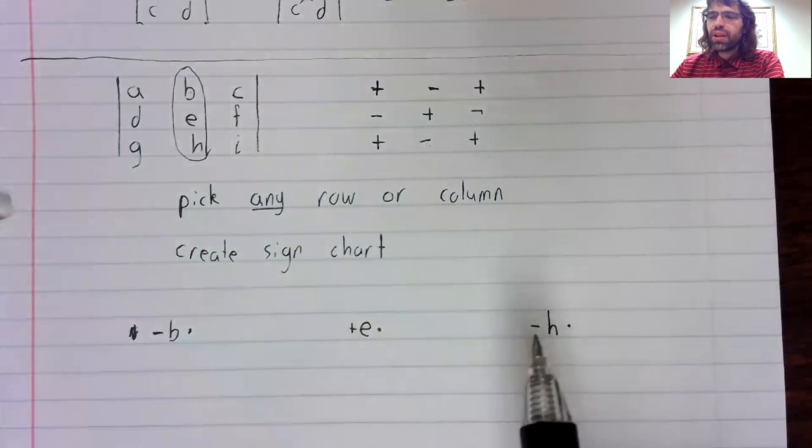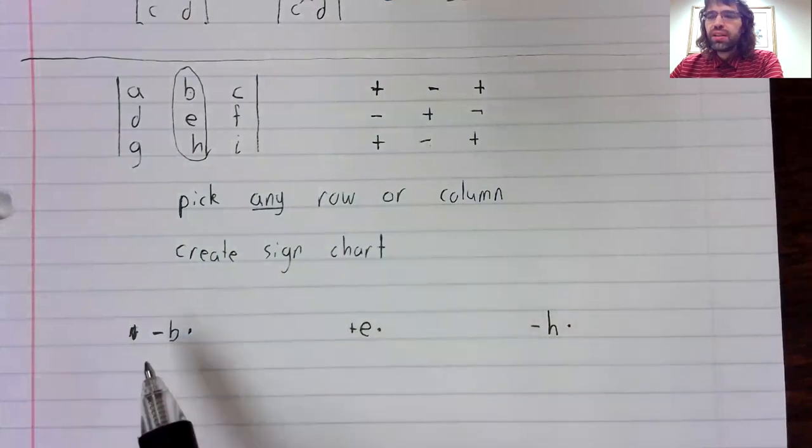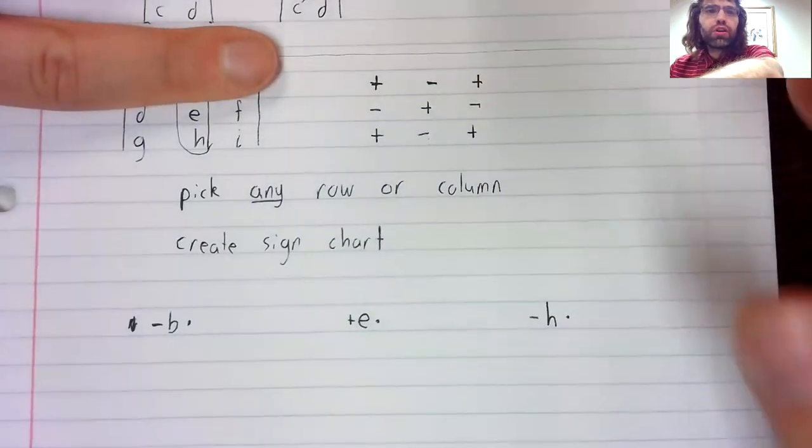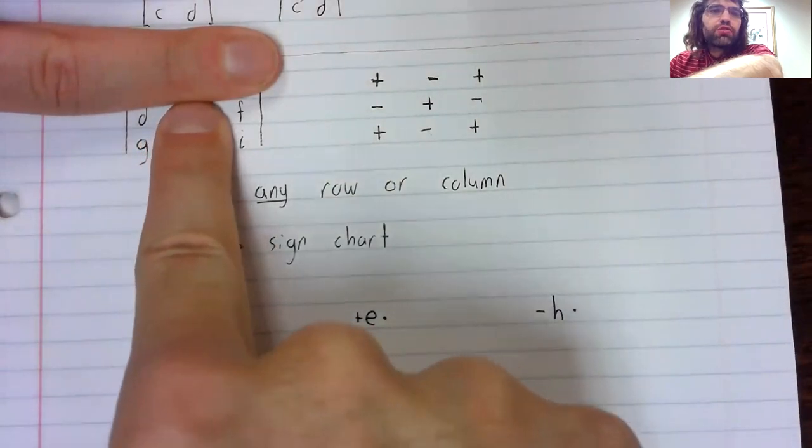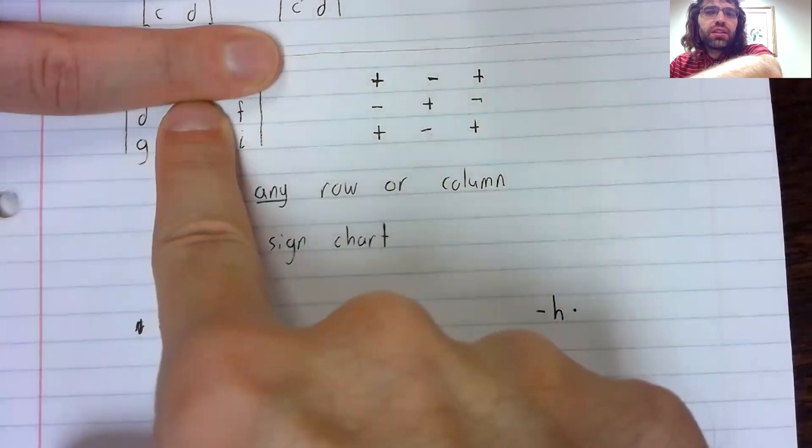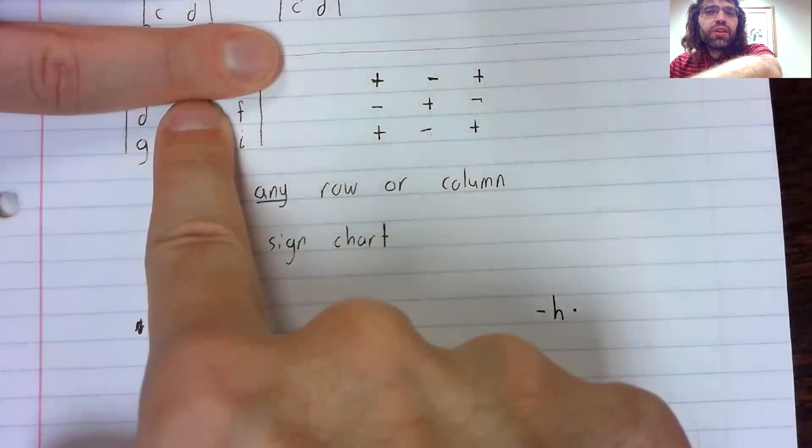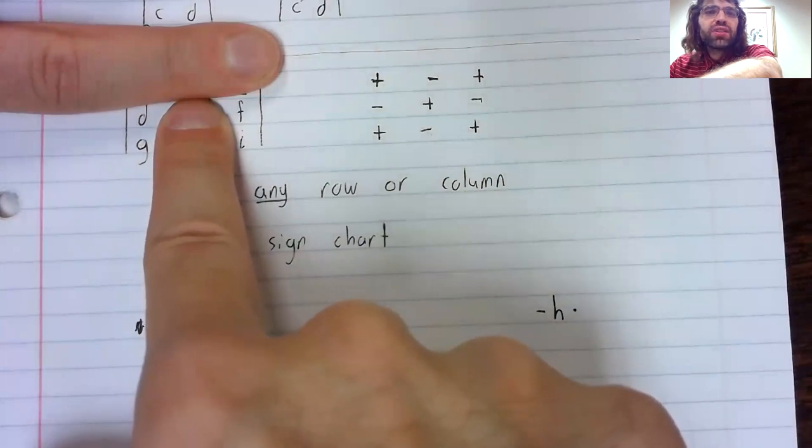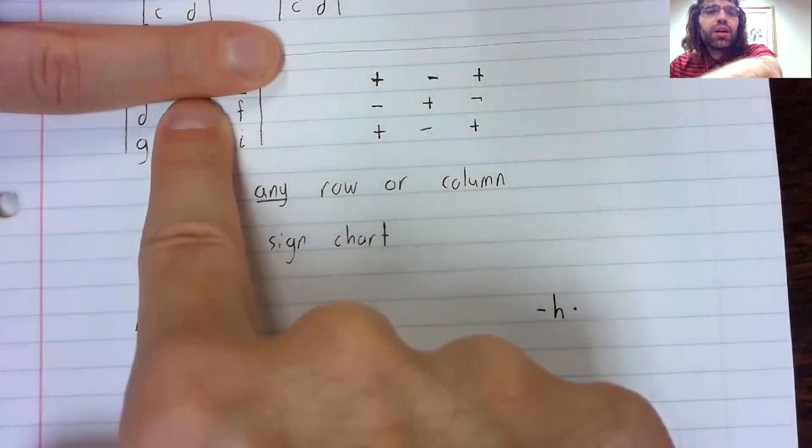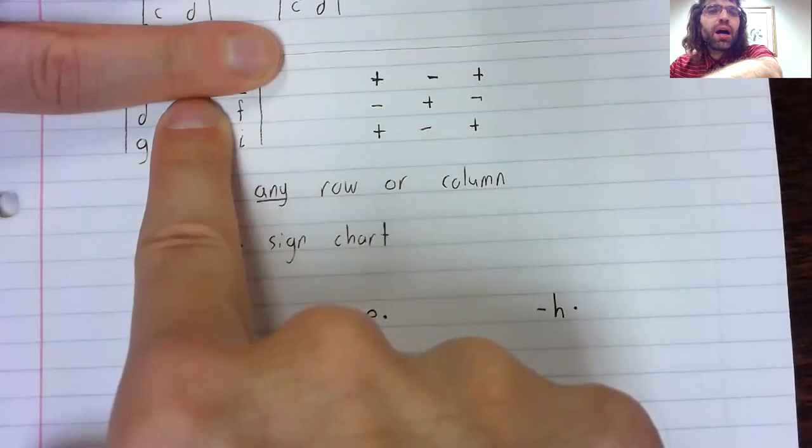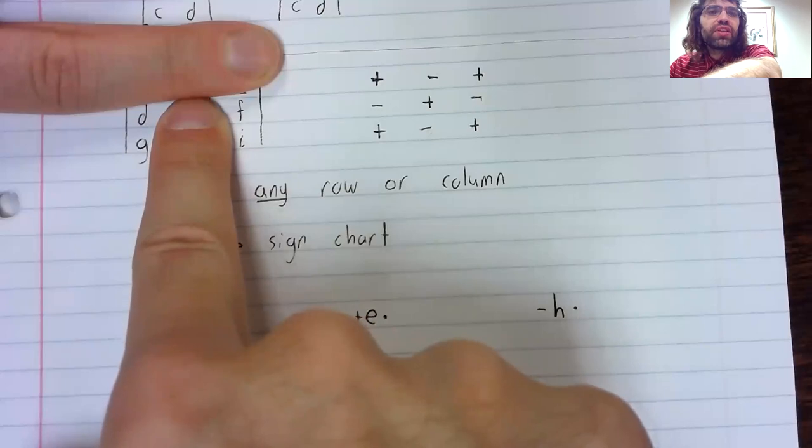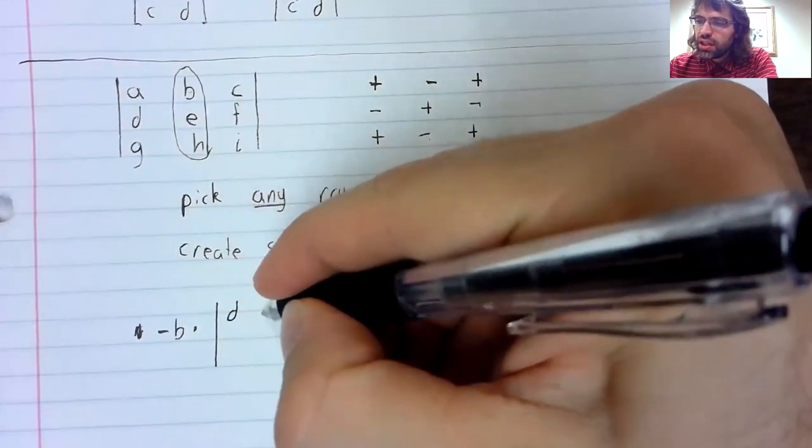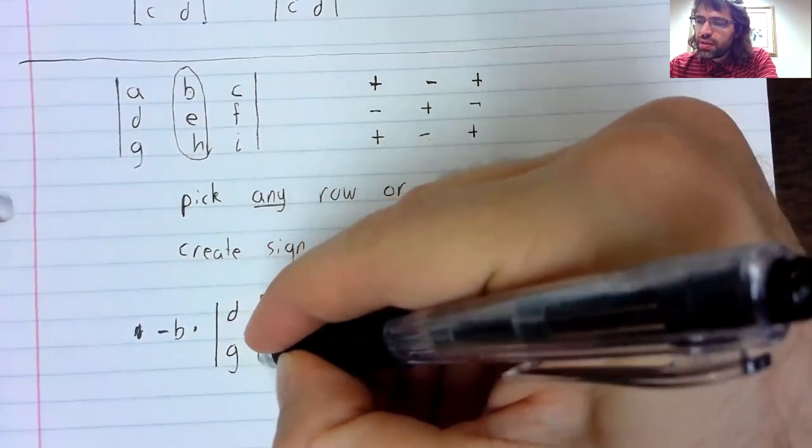What are these somethings? Let's start with b. Suppose that we look at this b. And we cross off the row that contains b. And we cross off the column that contains b. We're left with a two by two array of numbers. We can think of this as a matrix, d, f, g, i. What we're going to multiply negative b by is the determinant of this matrix.